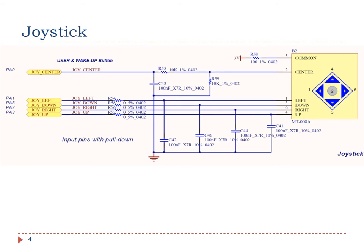Each pin is connected to the ground via a capacitor. The purpose of these capacitors is to perform hardware debouncing. When pressed, the switch within the joystick may bounce back and forth a few times before settling down. The bounces usually settle within 20 milliseconds. A capacitor can filter out any quick changes in a signal, and therefore can remove the bounces or glitches associated with switch transitions.